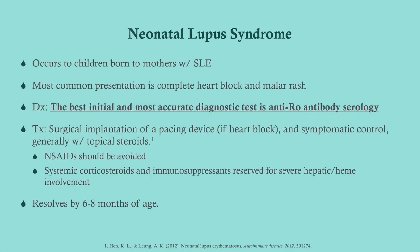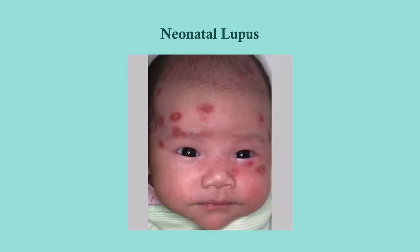Neonatal lupus most commonly presents as a heart block and a rash that could be malar or discoid. Diagnosis is made by getting anti-Ro antibodies in the baby. Treatment is basically symptomatic — if they have a heart block, use a pacing device; otherwise, symptomatic control for the rash with steroids. NSAIDs and corticosteroids and immunosuppressants should be avoided if possible, as neonatal lupus resolves on its own.